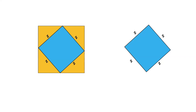Now let's represent the length of the bigger square by x plus y, because this side is x plus y and this side is also x plus y. So the length of the bigger square is x plus y.